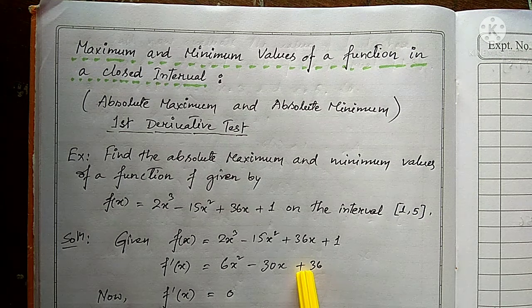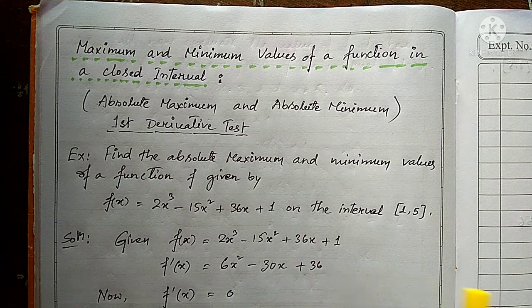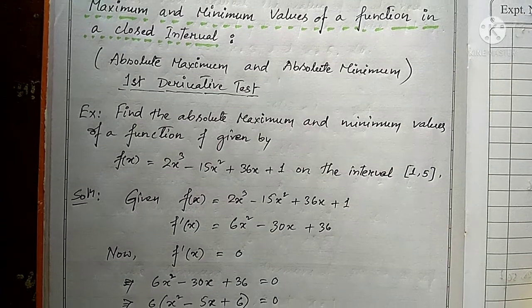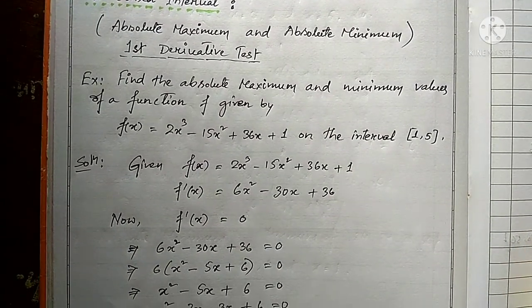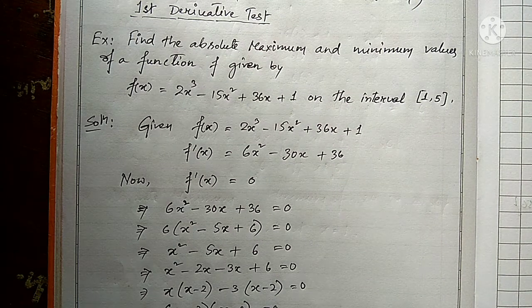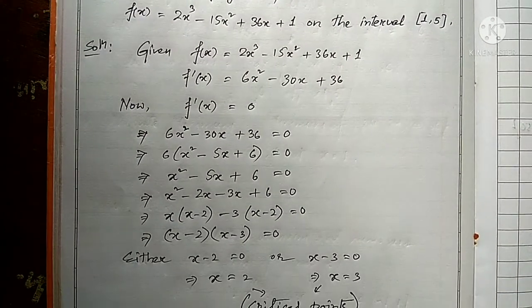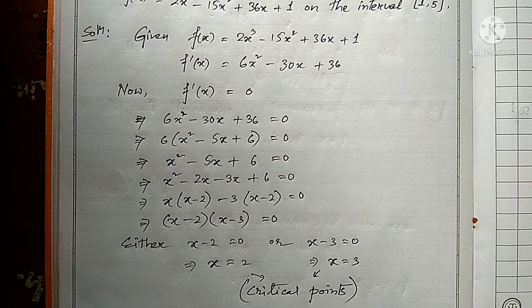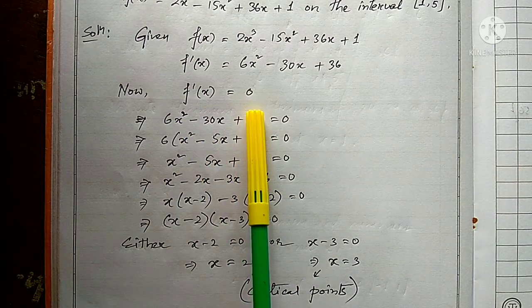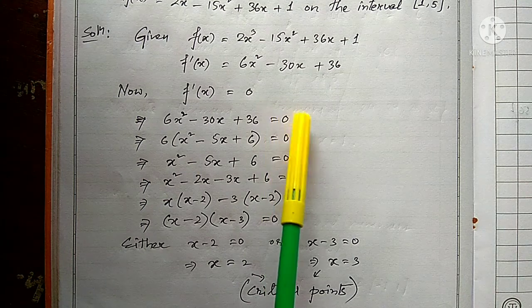Step 2: each and every time, write f'(x) = 0. This is always the second step — set the derivative equal to zero.